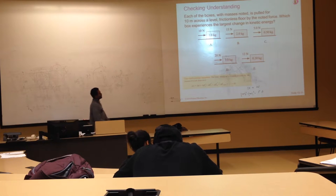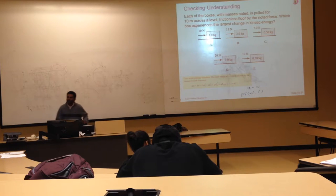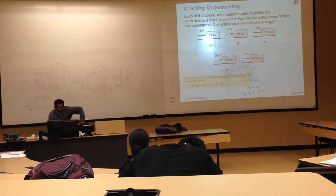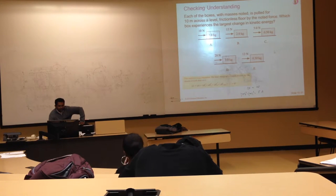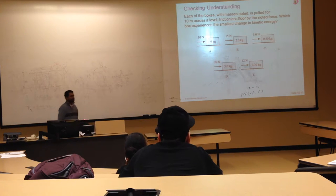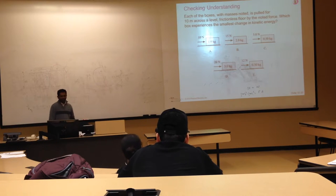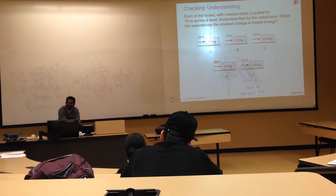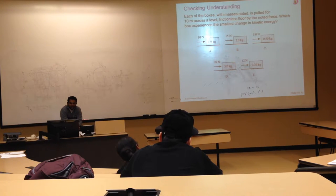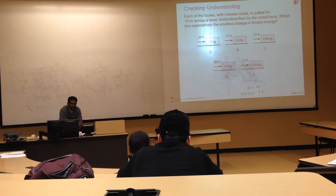The one having the largest kinetic energy change is the one with the largest force — the answer is D. What you need to note is not just the answer but how you get it. Now the same question: which box experienced the least change in kinetic energy? Using the same reasoning — delta K equals W — the answer is C.